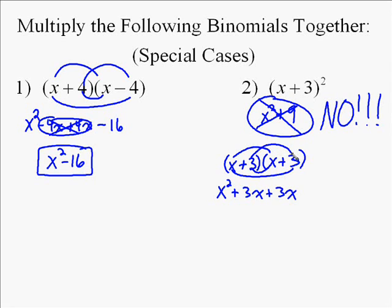If you notice, the two middle terms are the exact same thing, which will always be the case in a perfect square problem like this. You add them together, and you end up with x squared plus 6x plus 9.